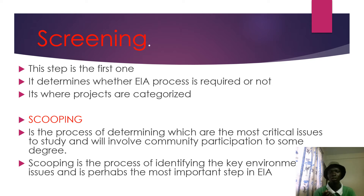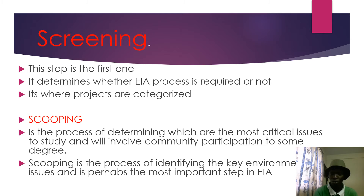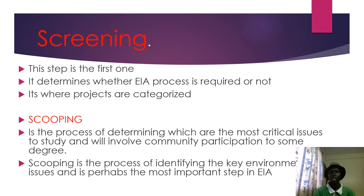The second process is called scoping. Scoping is the process of determining which are the most critical issues to study — the key environmental issues. It is perhaps the most important step in environmental impact assessment.